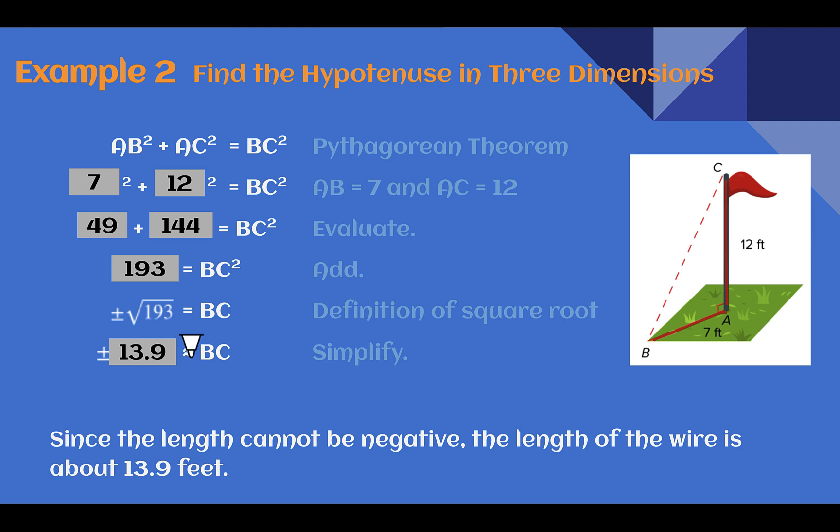So the length of the wire is about 13.9 feet. And again, we do not want our negative distance. So we only use positive 13.9.